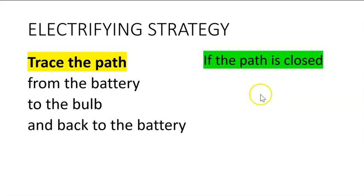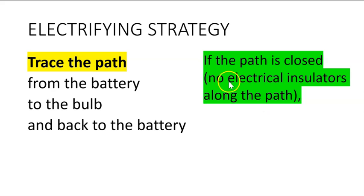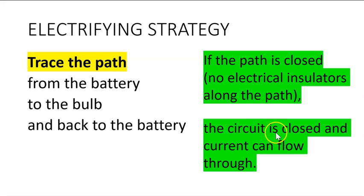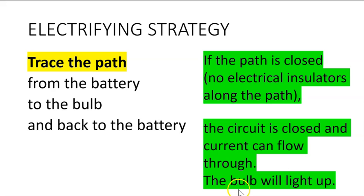If the path is closed, which means there are no electrical insulators along the path, the circuit is closed and current can flow through. This means the bulb will light up.